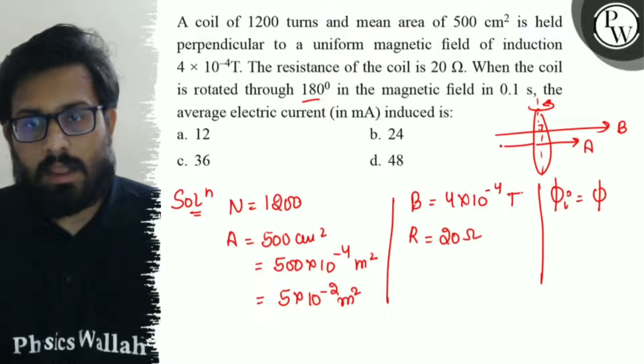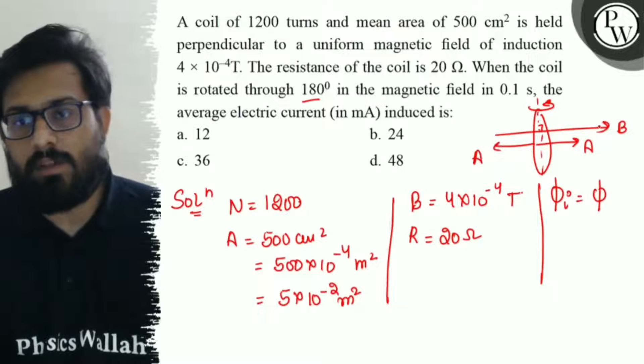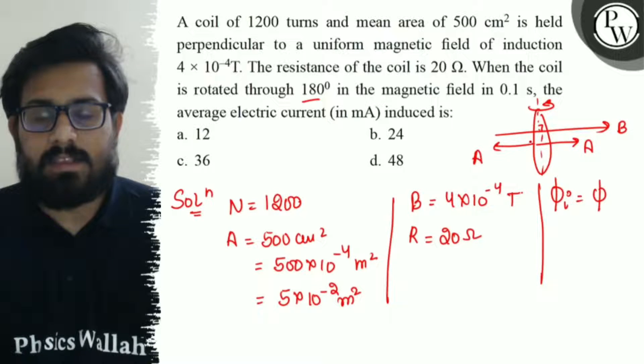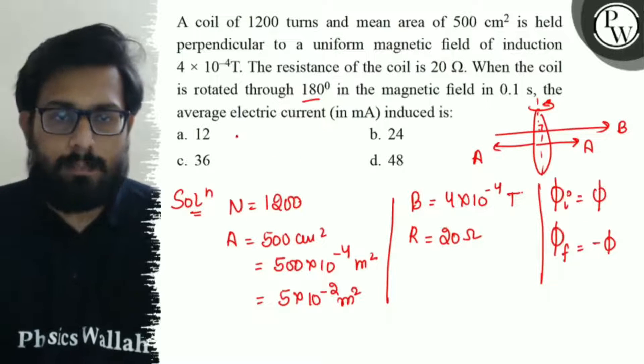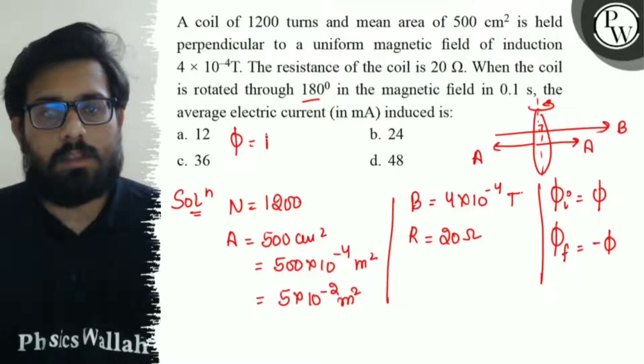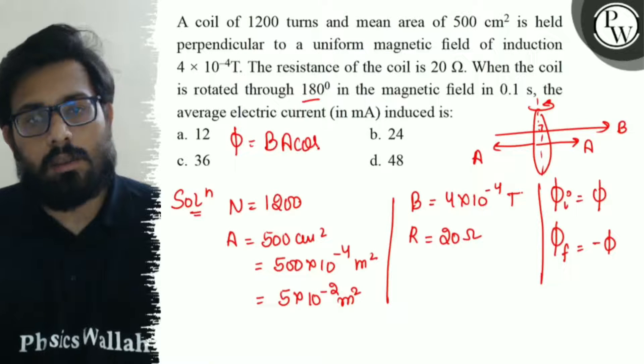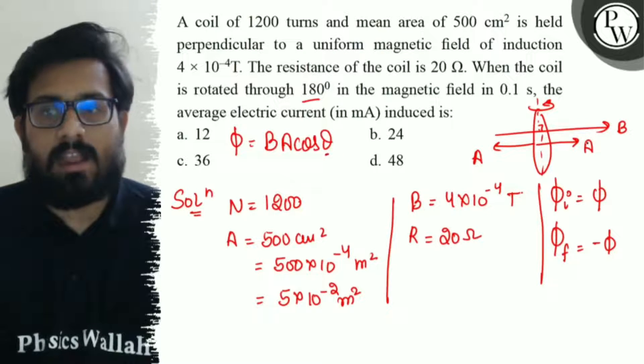When rotated, the area vector goes this way while magnetic field is in that direction. In that case, the angle between them is 180 degrees, so you have a final flux which is -Φ.